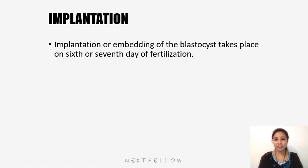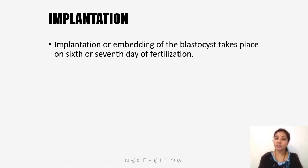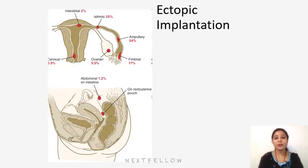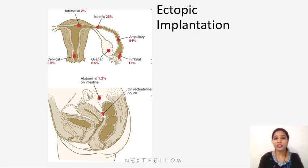Implantation is a critical event happening during the second week of development. It is the embedding of the blastocyst within the wall of the uterus, taking place on the sixth or seventh day of fertilization. Normally, the upper segment and posterior wall of the uterus is the normal site of implantation. If implantation occurs elsewhere, it is considered ectopic implantation. The trophoblast cells invade the epithelium and underlying endometrial stroma, eroding the endometrium through proteolytic enzymes.